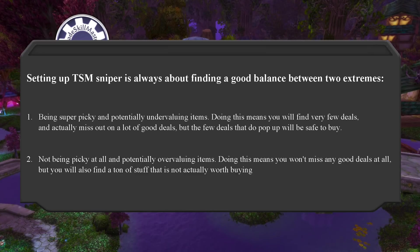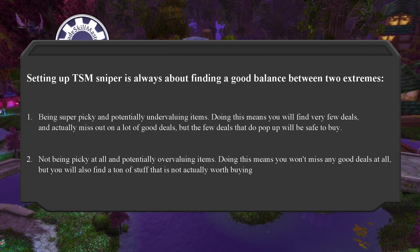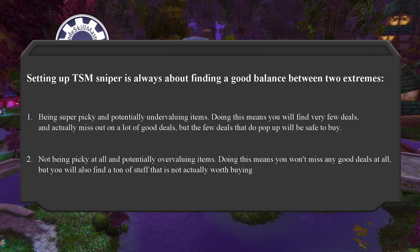The first extreme is being super picky and potentially undervaluing items — you will find very few deals and actually miss out on a lot of good deals, but the few that do pop up will be safe to buy. The other extreme is not being picky at all and potentially overvaluing items — you won't miss any good deals, but you will also find a ton of stuff that is not actually worth buying. Lots of people ask why DB Market and DB Min Buyout are not in the min price string. Adding them moves your sniper closer to the first extreme, meaning you will miss out on a lot of good deals.